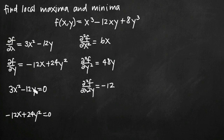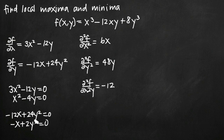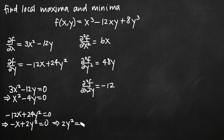We simplify these equations. Dividing the first equation by 3 gives x squared minus 4y equals zero. Dividing the second equation by 12 gives negative x plus 2y squared equals zero. To solve this system of simultaneous equations, we take the second equation and add x to both sides, immediately solving for x in terms of y: x equals 2y squared.